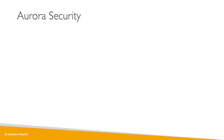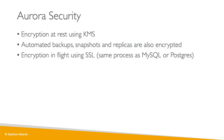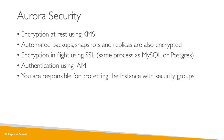For security, Aurora is very similar to RDS. You get encryption at rest using KMS. Automated backups, snapshots, and replicas are all encrypted. Encryption in flight uses SSL — for MySQL it's a SQL statement to enforce SSL, while for Postgres it's the parameter group. You can authenticate to Aurora using IAM, and you're responsible for protecting the instance with security groups. Just like RDS, you cannot SSH into the instance.